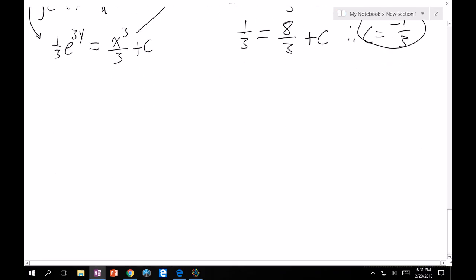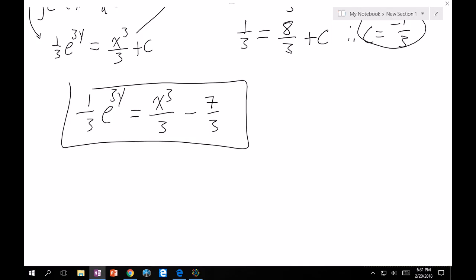This means that I can write my solution as 1 third e to the 3y is equal to x cubed over 3 minus 7 thirds. And this is a perfectly valid final answer. However, I want to note something. This is known as an implicit solution. What this means is I'm not giving you the solution explicitly as y is equal to f(x). There's clearly something happening to my variable y, but it's okay because the relation between y and x is preserved.